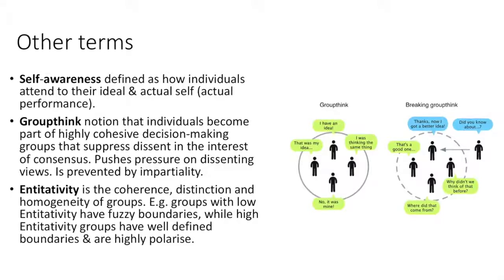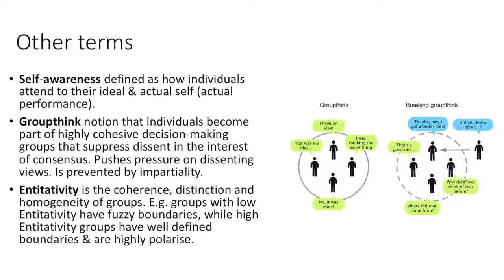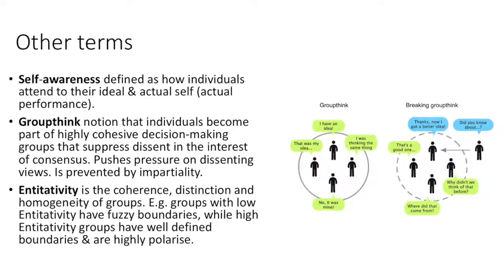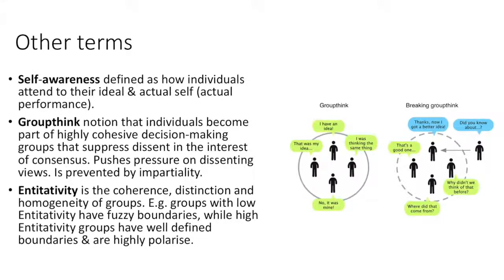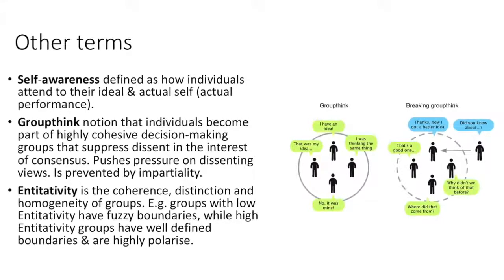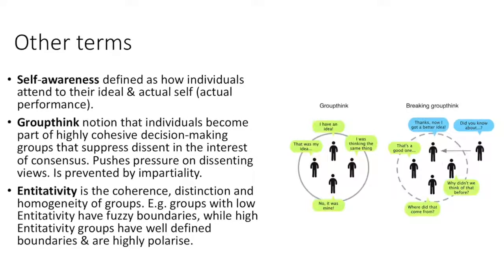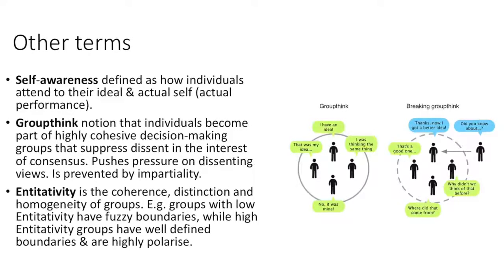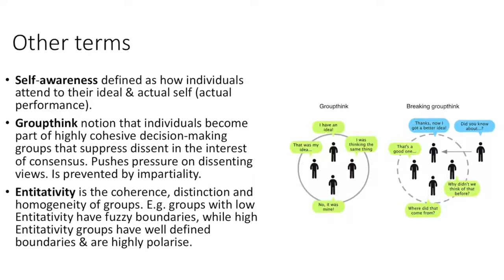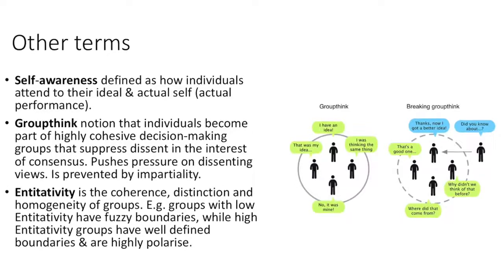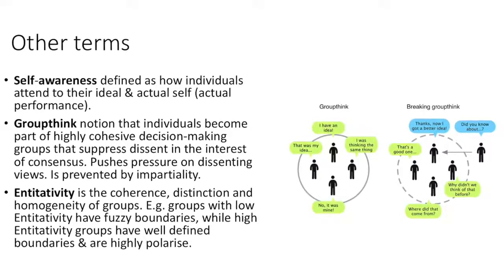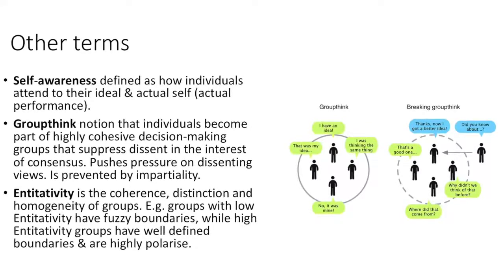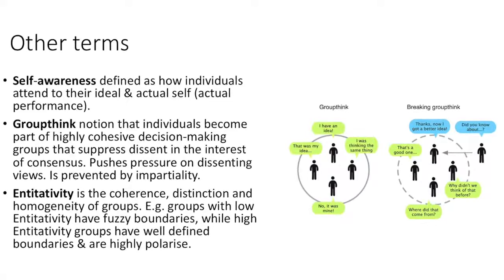Entitativity is the coherence, distinction and homogeneity of groups. Groups with low entitativity have fuzzy boundaries, while high entitativity groups have well-defined boundaries and are highly polarized — for example, being Democrat, Republican, Catholic, or Protestant.